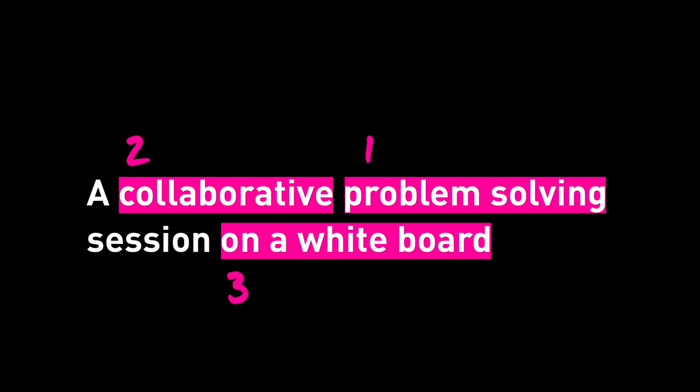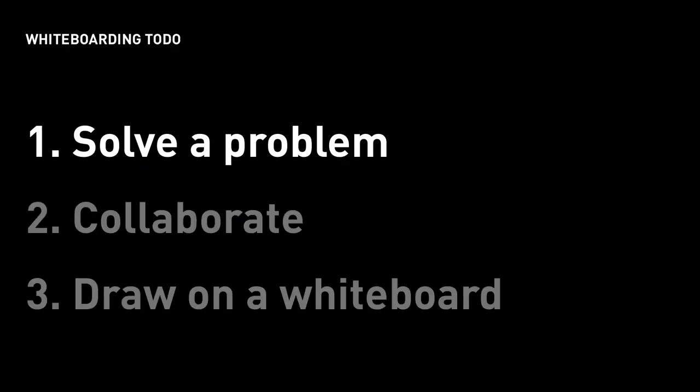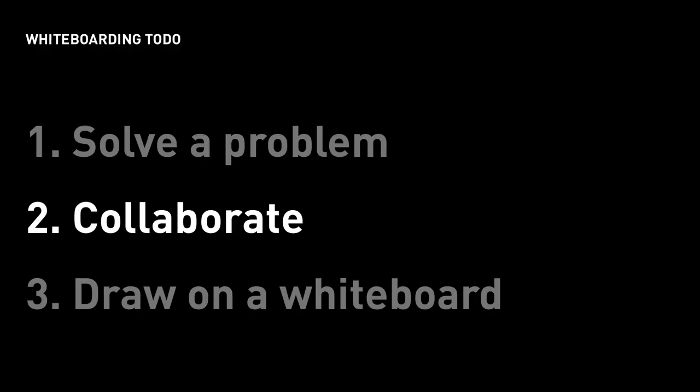There are actually three things you're doing in a whiteboarding session. First, to solve the problem — you should understand what the problem is, what the root cause is if it's not clear, whether there's any direct control over the root problem, who the users are, and what the constraints are. You should be able to brainstorm three to five ideas, validate those ideas, and so on.